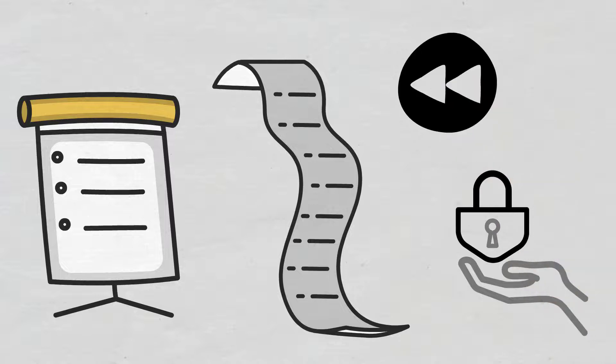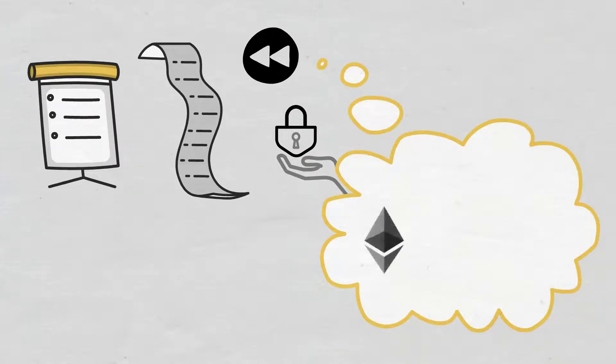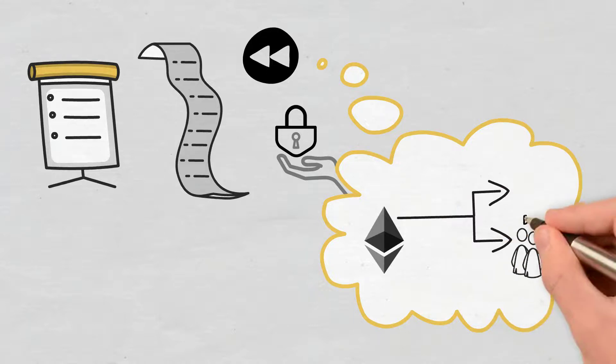A perfect example of this is when the Ethereum blockchain created a hard fork in order to reverse the hack on the decentralized autonomous organization.